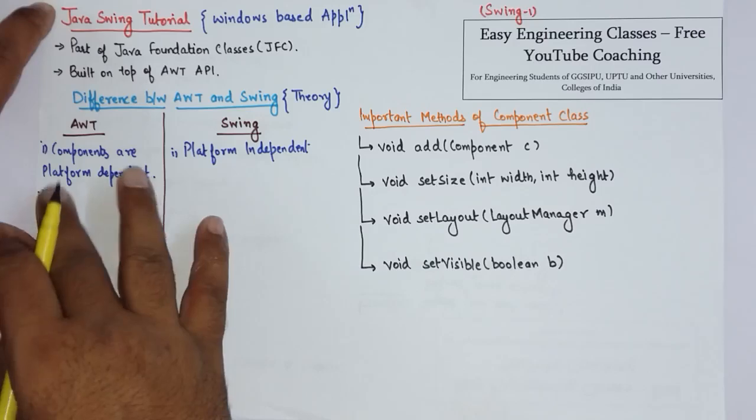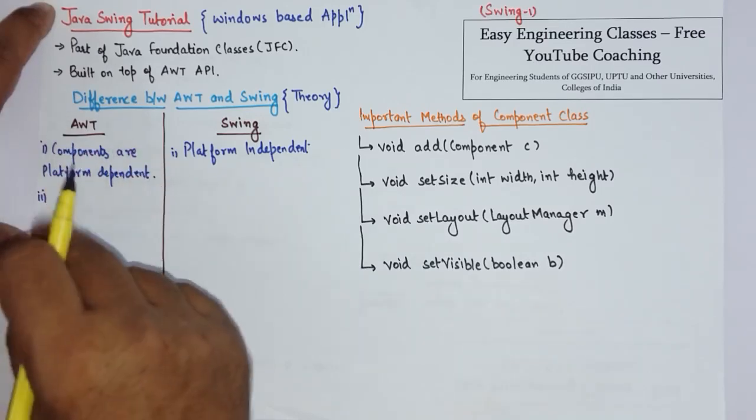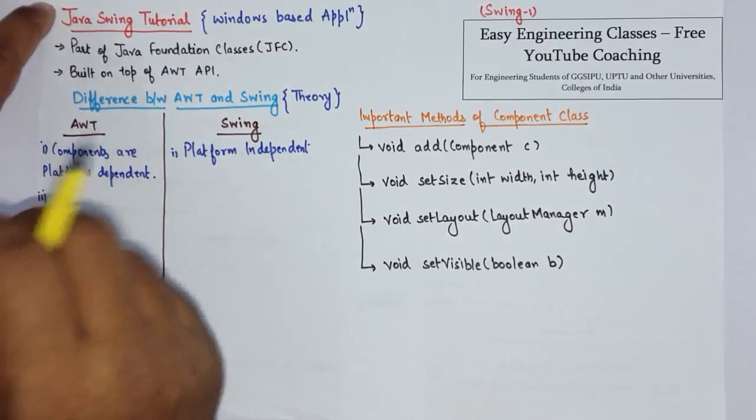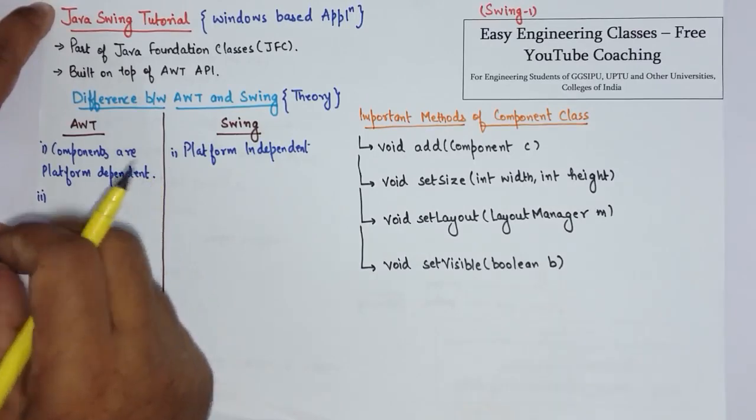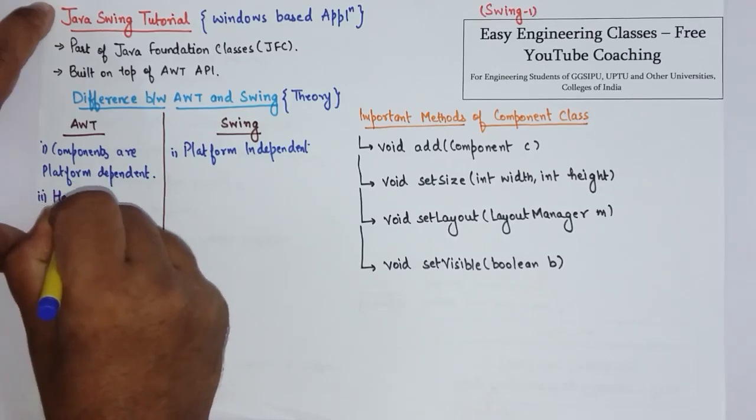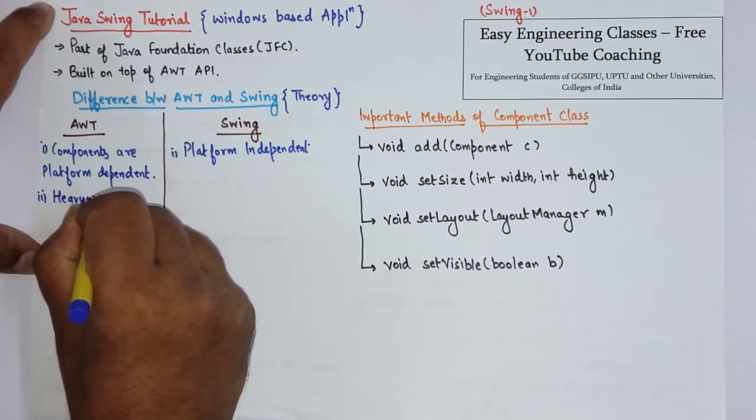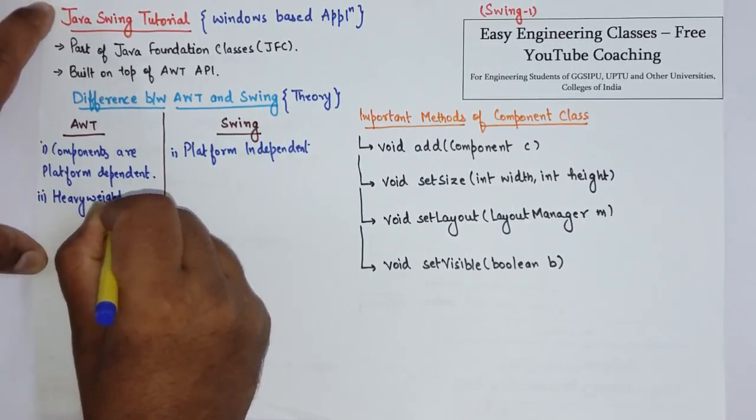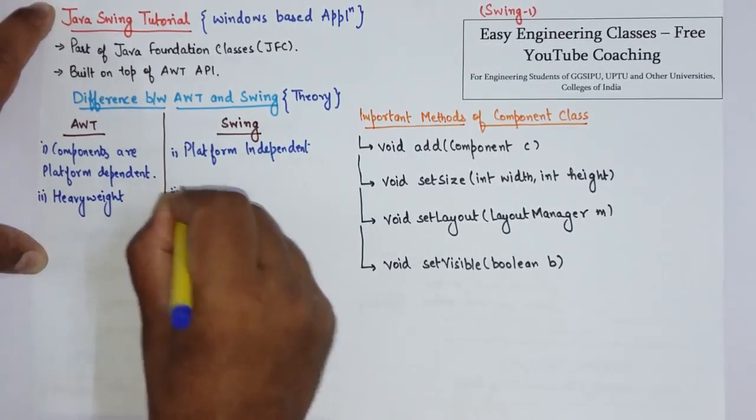Second, since AWT components are platform dependent for their look and feel, they need to access resources from the platform or the OS, so these are heavyweight components, whereas Swing components are lightweight.